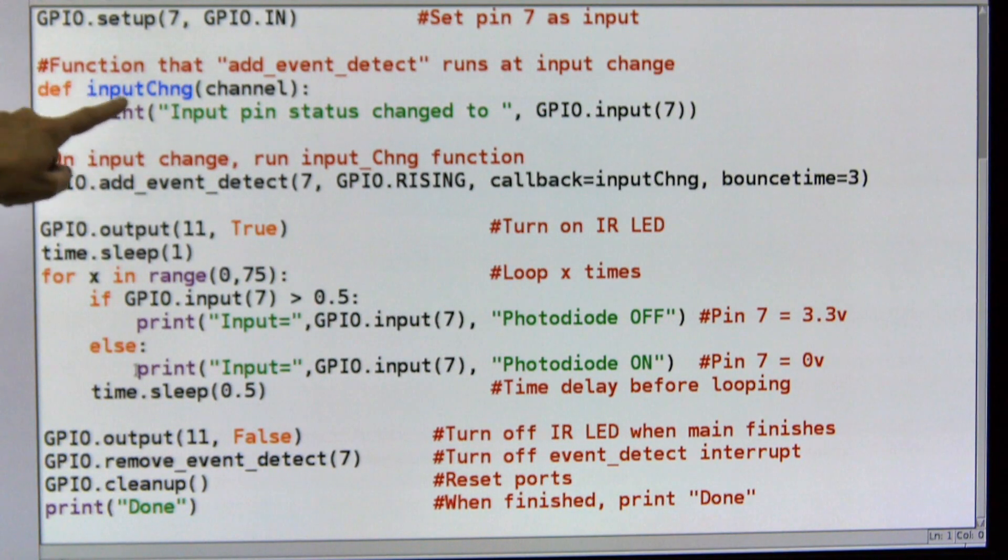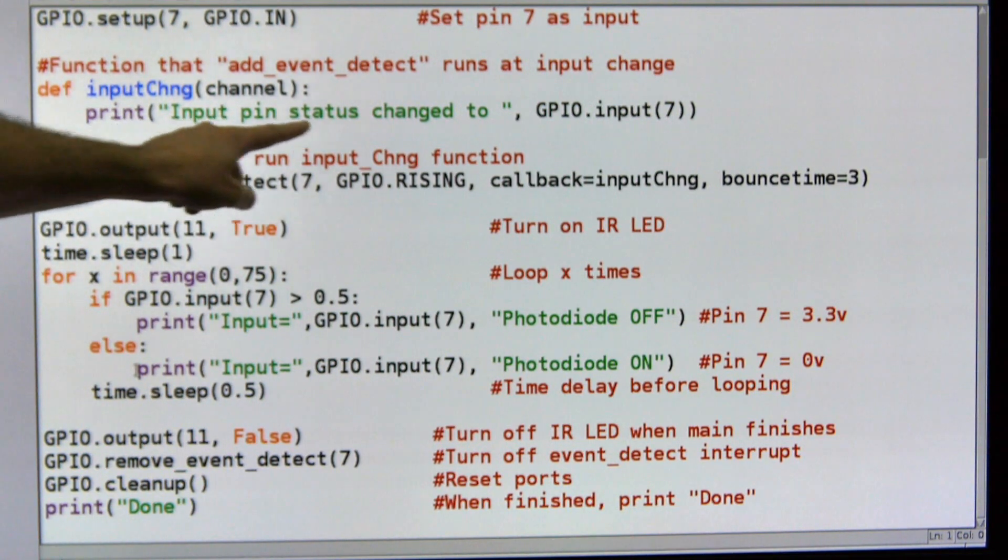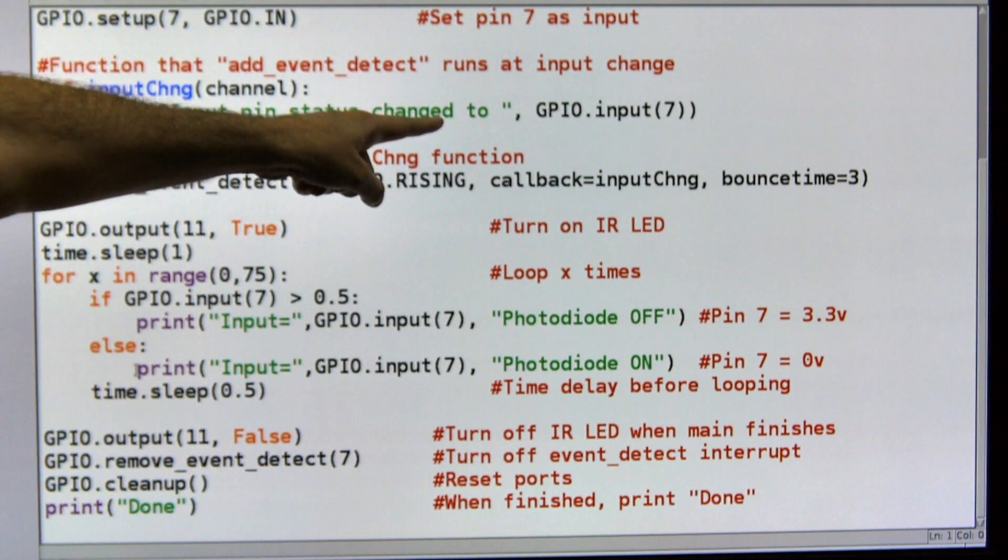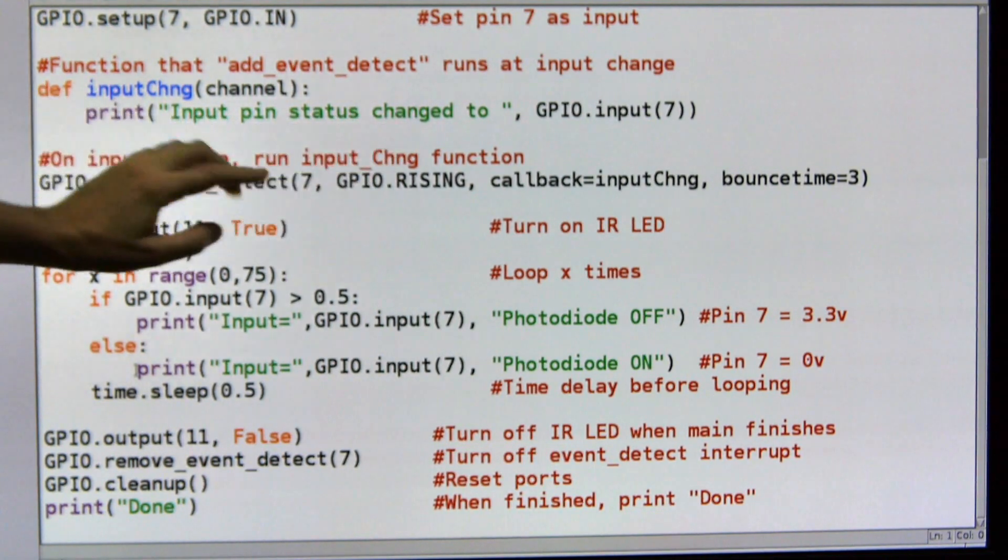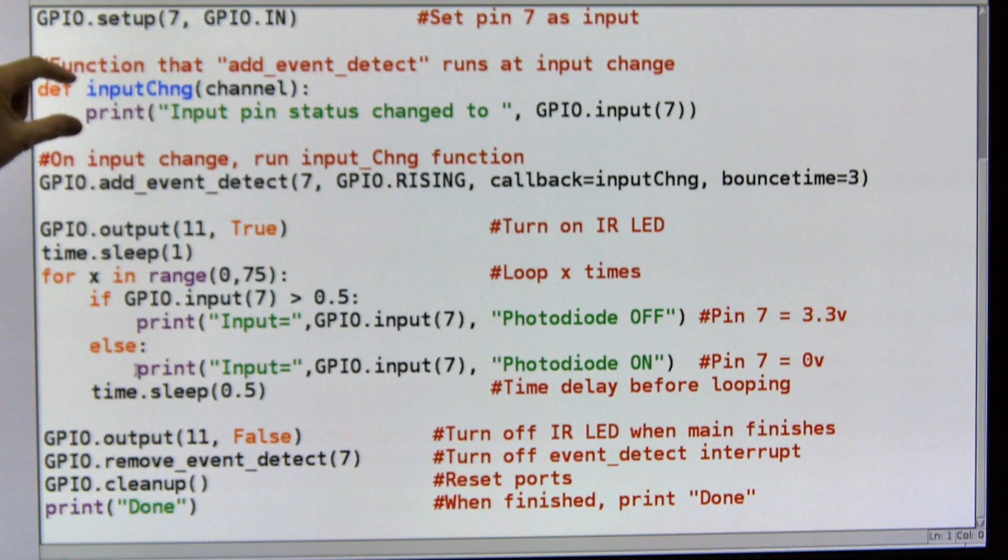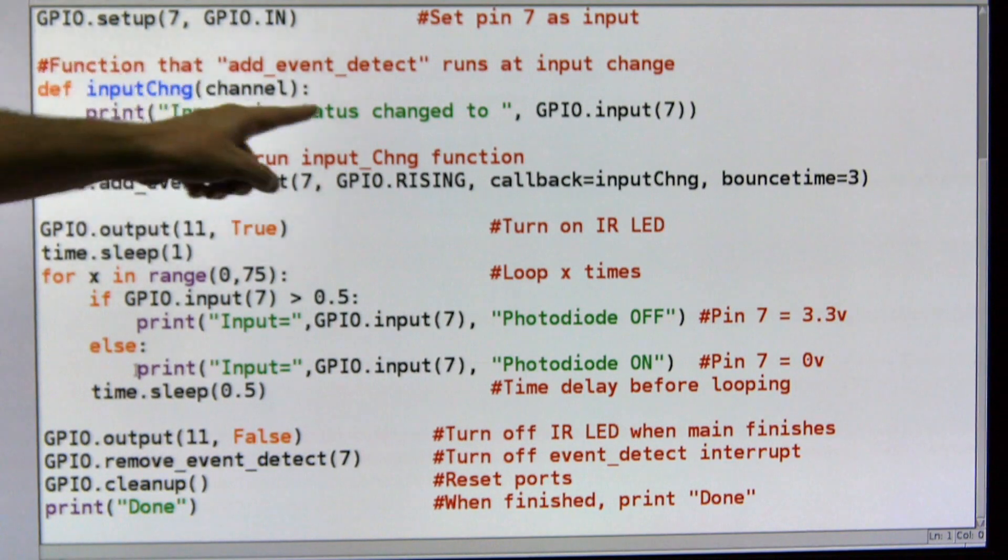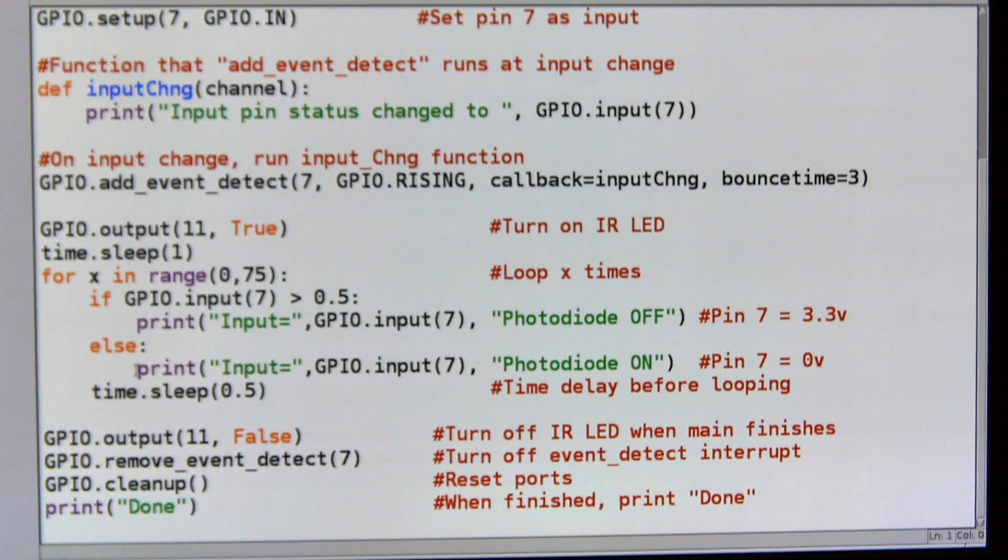I've added this function. As you can see, it's only two lines. It's called input change. And then I'm going to print a statement showing the status of input 7, of pin number 7. So that's all this thing does. It's just a small subroutine that's going to print the status of pin 7.